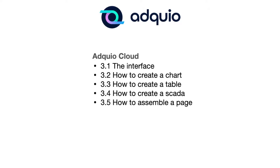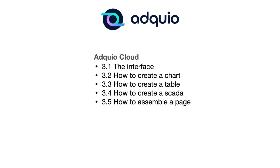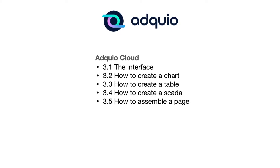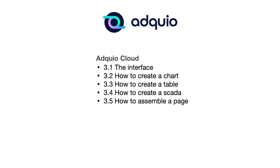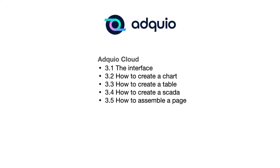Finally, in the third block, we will see the web interface of Adkio Cloud. We will show you how to create a graph, a table, and how to create reports such as a SCADA. We will also show you how to create a page that integrates any number of these elements — for example, a page with two graphs and a table, or a page with a report and a SCADA, or any other combination desired.